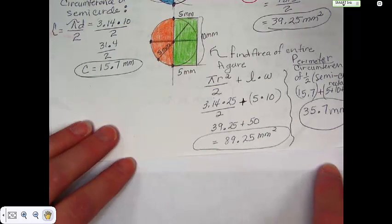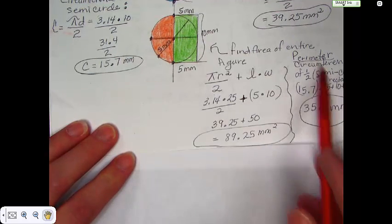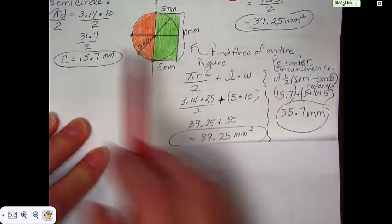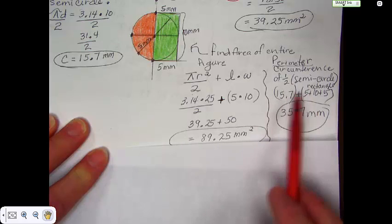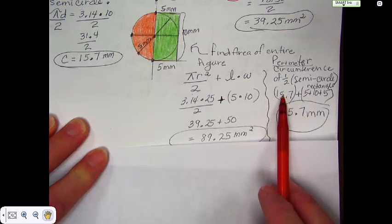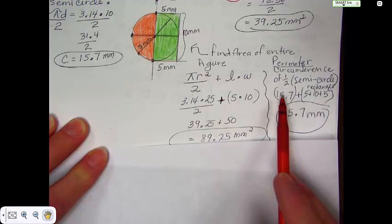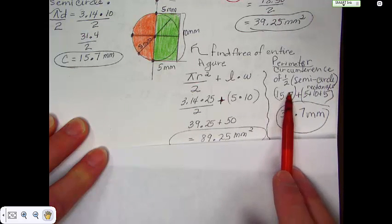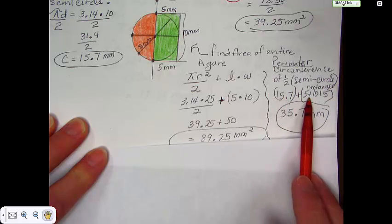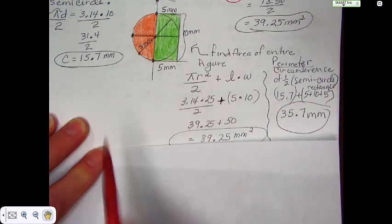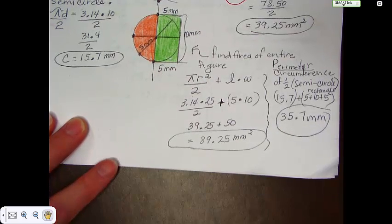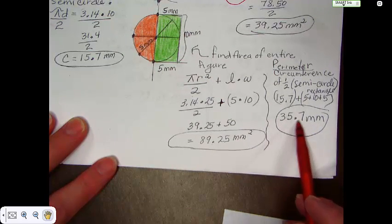Now, if you want to get the perimeter of the same object, you would use the same formula that we used over here. And you would find the perimeter or the circumference of the whole circle and then you would divide it in half, which we already have done. So I just carried it over here. 15.7 plus the perimeter of the three sides of the rectangle, which is 5 plus 10 plus 5. And you would add them together and that would be 35.7.